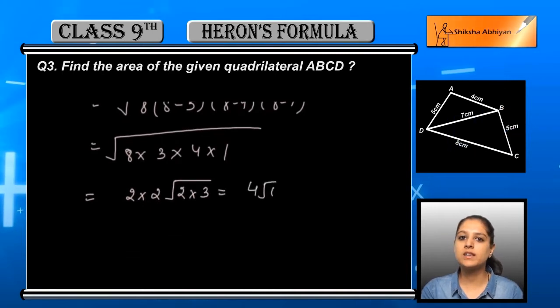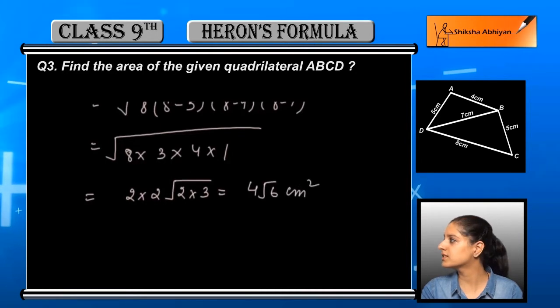Which is equal to 4 root 6 centimeter square. So the first triangle's area is 4 root 6 centimeter square.